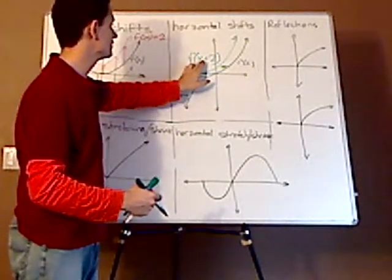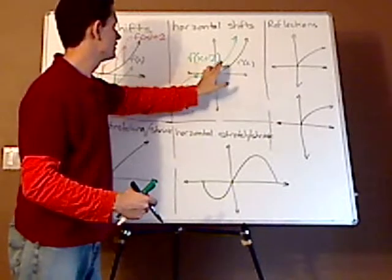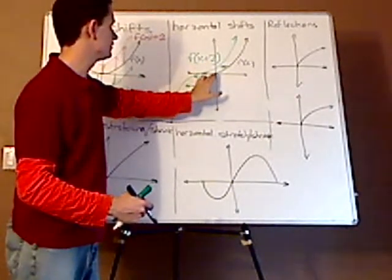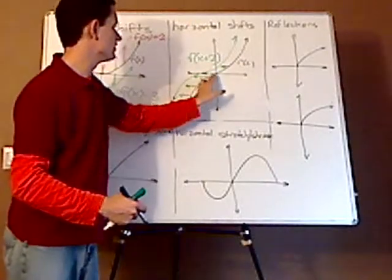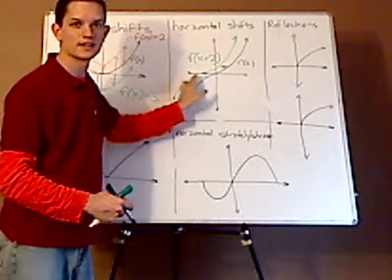So if I plug in negative two in here, it would be zero. f of zero is zero. You see that? That's how it's shifting.